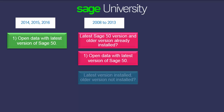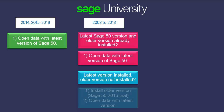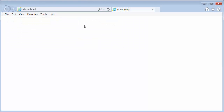In the second scenario, you have the latest version of Sage 50 installed on the computer, but the older version is not installed. In this case, you need to install the older version on the new computer. If you don't have the installer for the older version available, you can install the trial version of Sage 50 2015. Let's see how to install this trial version.